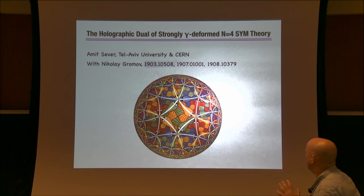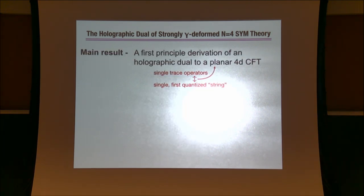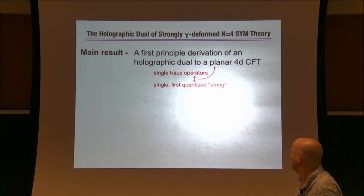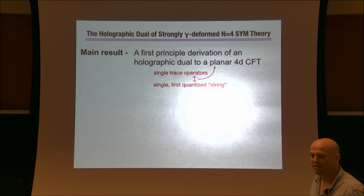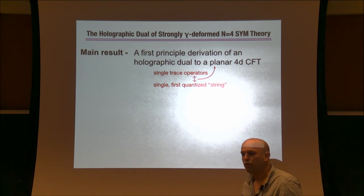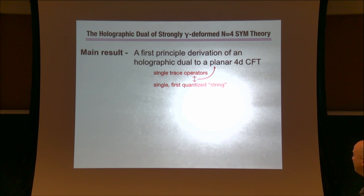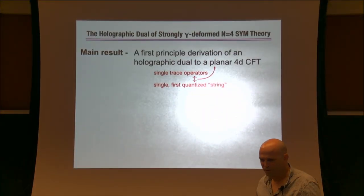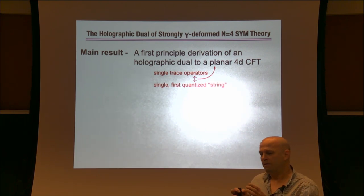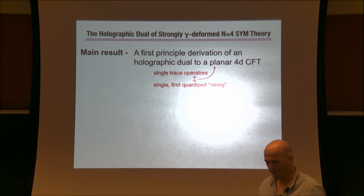Let me start with the bottom line, which is our main result. Our main result is for this theory, the first principle derivation of a holographic dual of a planar 4D CFT. In this talk I will only talk about the leading operator in the planar limit, which is a single trace operator. The dual description would be a sort of discretized, first quantized single string — no gravity or black holes, just a single string dual to a single trace operator.